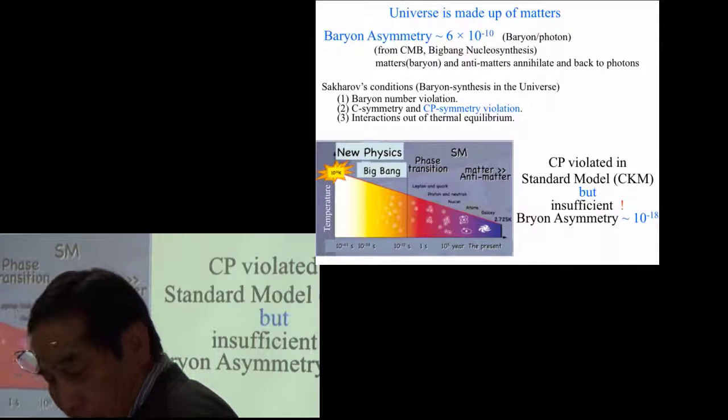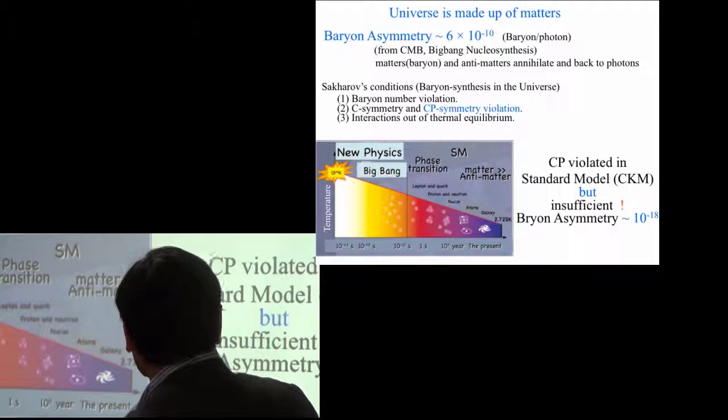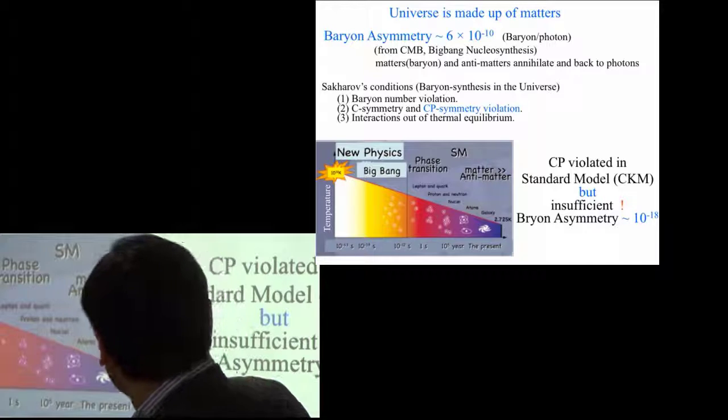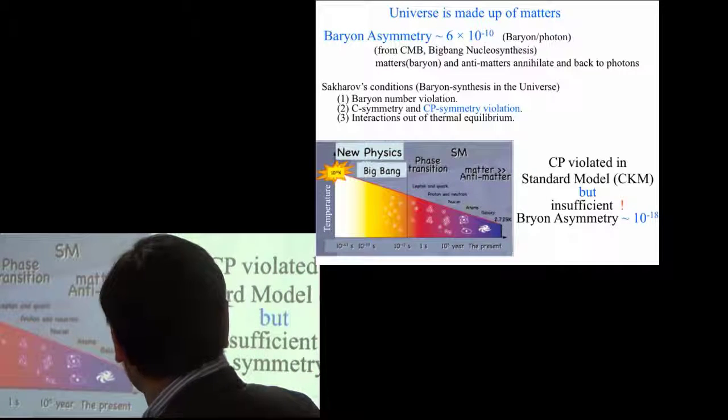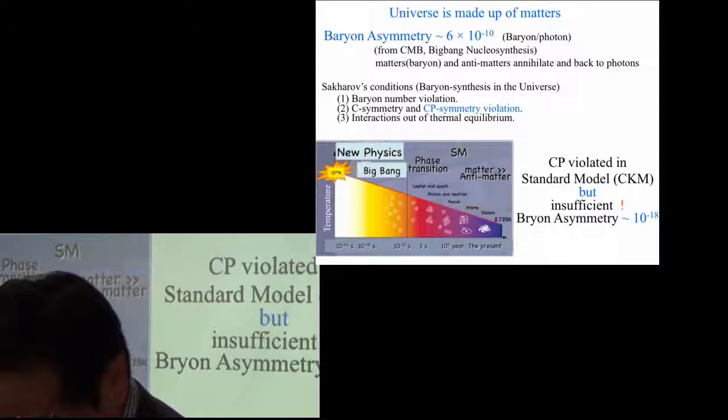And the standard model, of course, predicts the CP violation. However, it is insufficient. Baryon asymmetry, which is predicted by the standard model, is about 10 to the minus 18. That means it's totally insufficient.